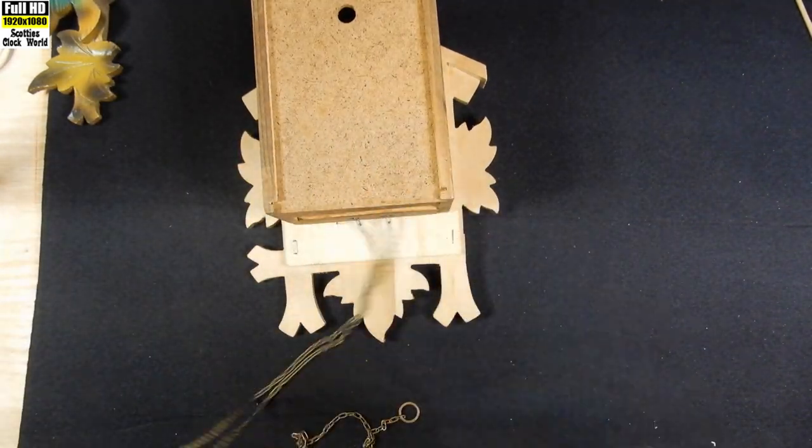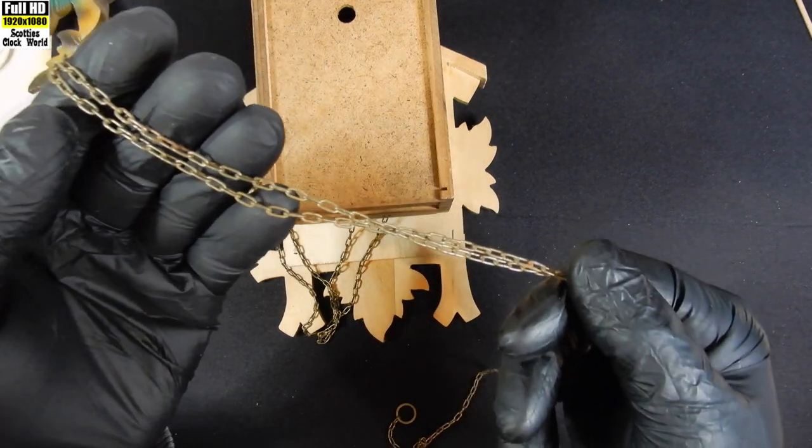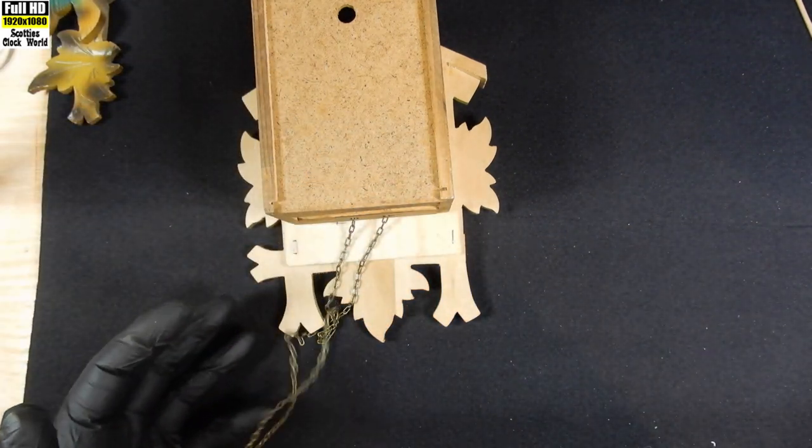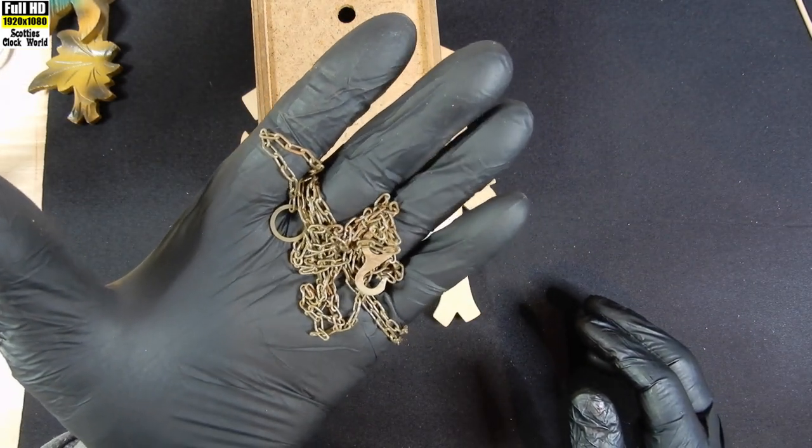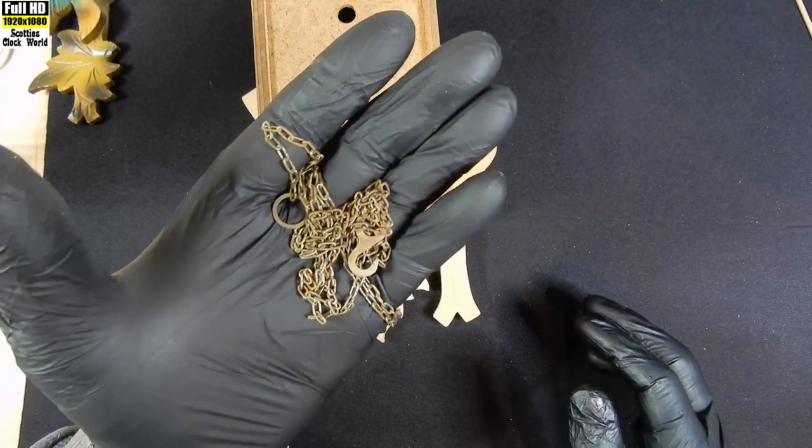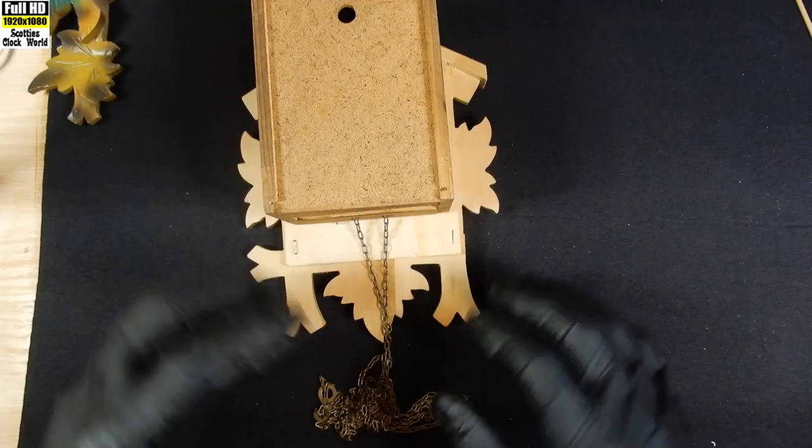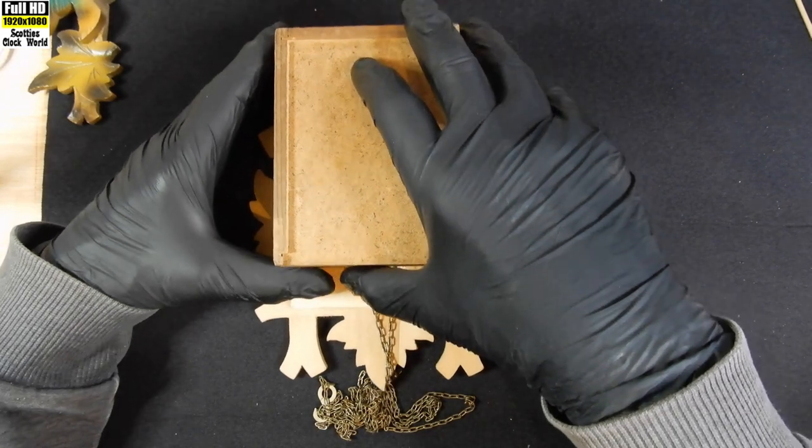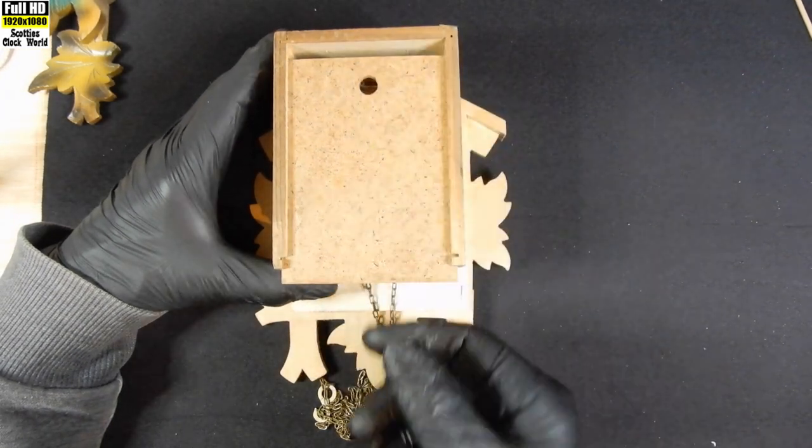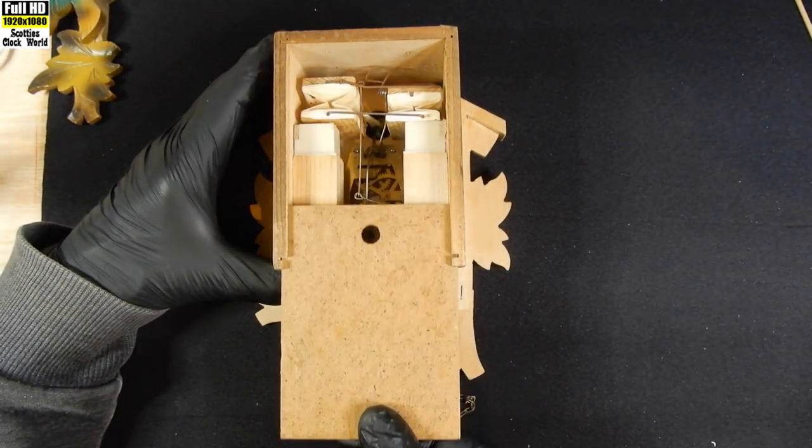The chains seem to be in relatively good nick. We'll give them a clean. There's a little bit of rust on them so we'll clean them up before we put them back in again. Now the back of the clock comes out, just slides down. Take that out.